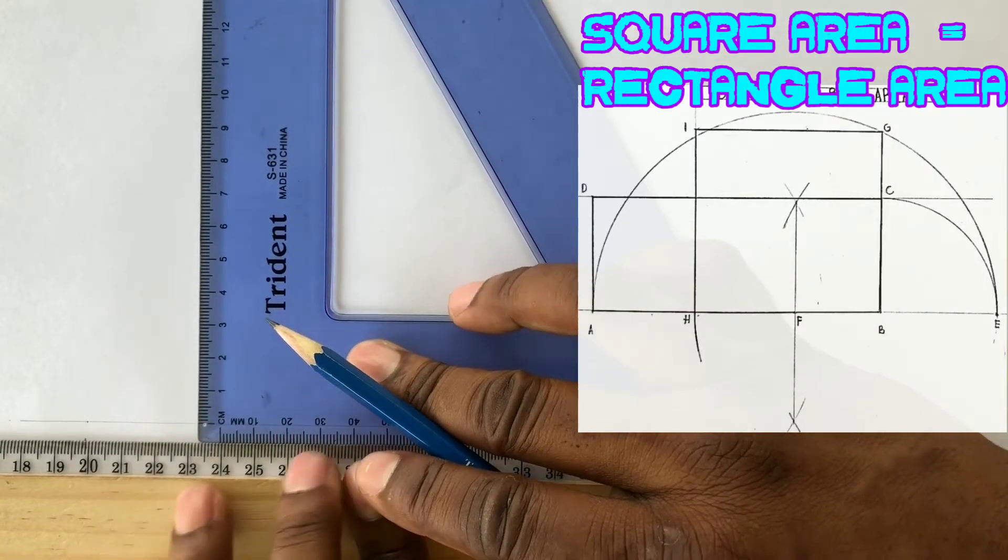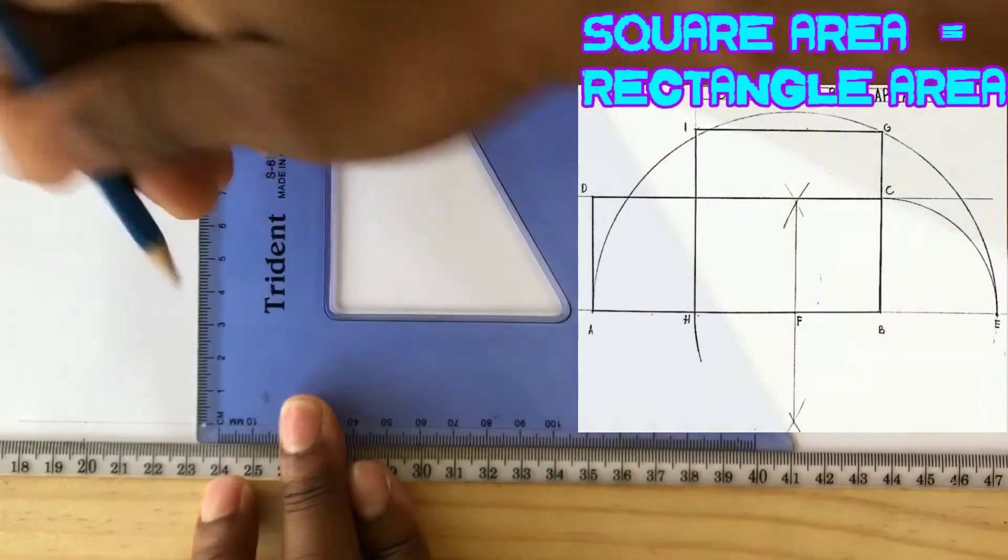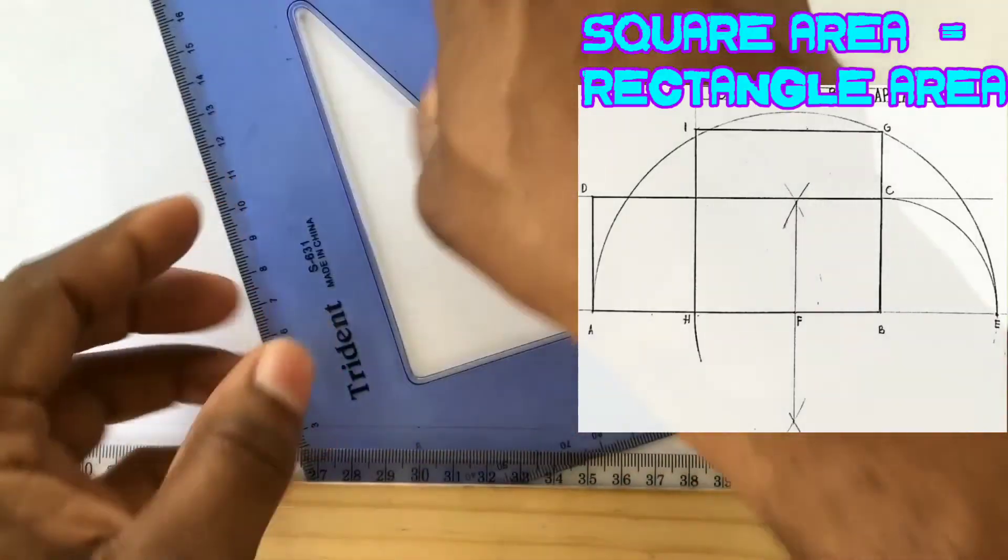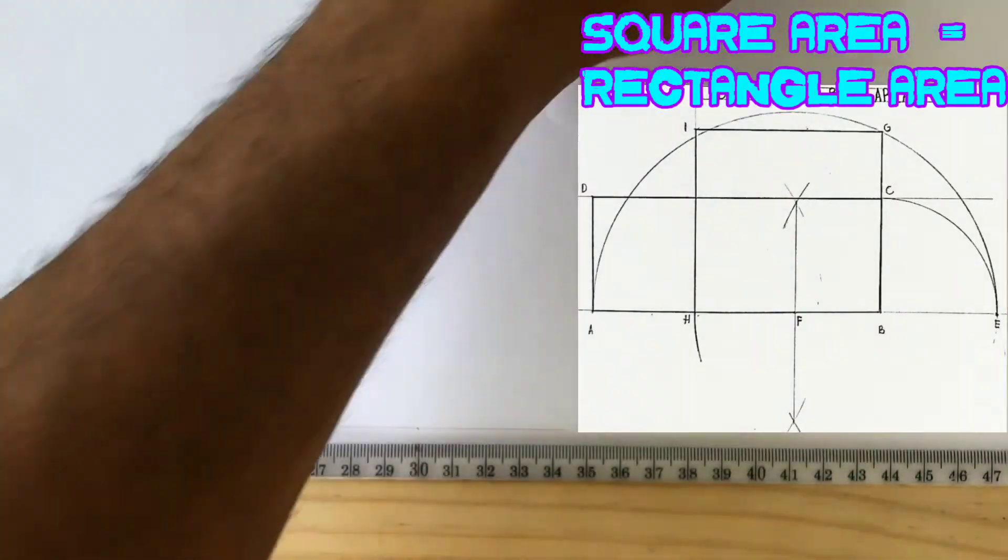Ensure that the point you identify is exactly 40 millimeters away. Ensure you can also see this point.